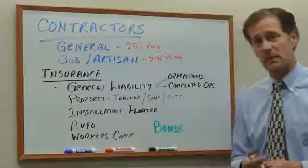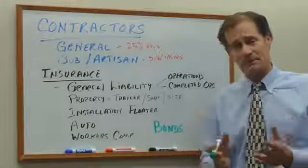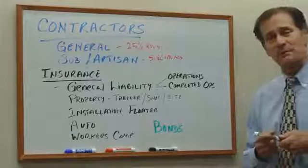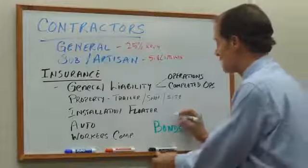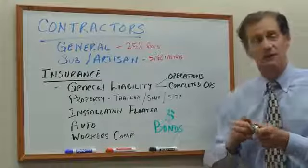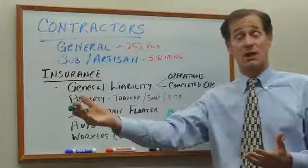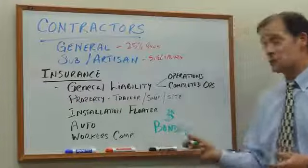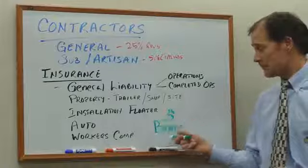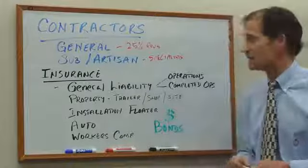The last thing I'll mention is bonds. In a contracting environment, a performance bond is the most common type. A performance bond really isn't a type of insurance — it's an extensive credit check that says you are financially capable of completing a job that you're bidding on. A bid bond actually comes before that and says this person is qualified to meet the requirements of the job.